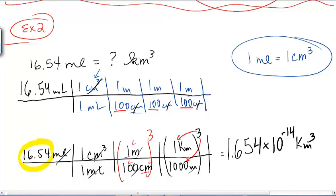Of course, this is a great time to look at the answer and ask: does that make sense? Why is my number so incredibly small? But if you think about the problem, we have tiny milliliters and we're comparing that to an enormous volume in kilometers cubed. Imagine how far a kilometer is — now cube that. That's why the number is so small.